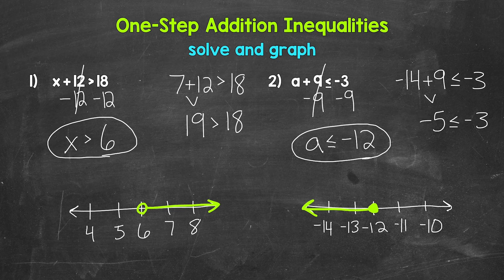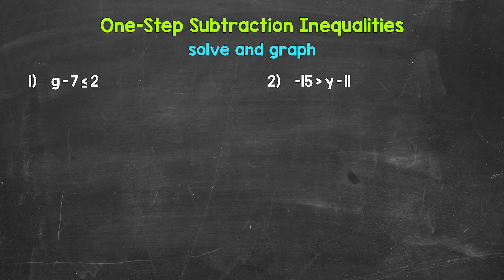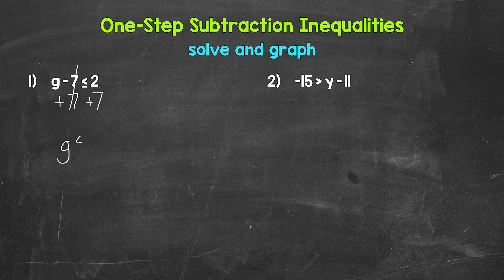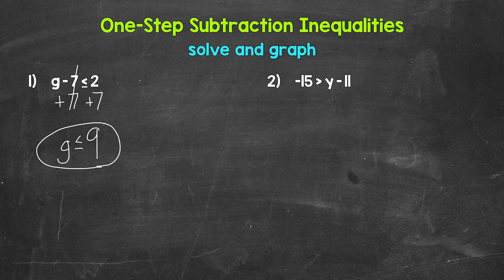Now let's move on to subtraction. In number 1, we have G minus 7 is less than or equal to 2. We need to isolate the variable G. We are subtracting 7, so we need the inverse operation of subtraction, which is addition. Add 7 to the left side, and whatever we do to one side we must do to the other, so add 7 to the right side as well. On the left side, these 7s cancel each other out and G is now isolated. On the right side, 2 plus 7 gives us 9. So G is less than or equal to 9.